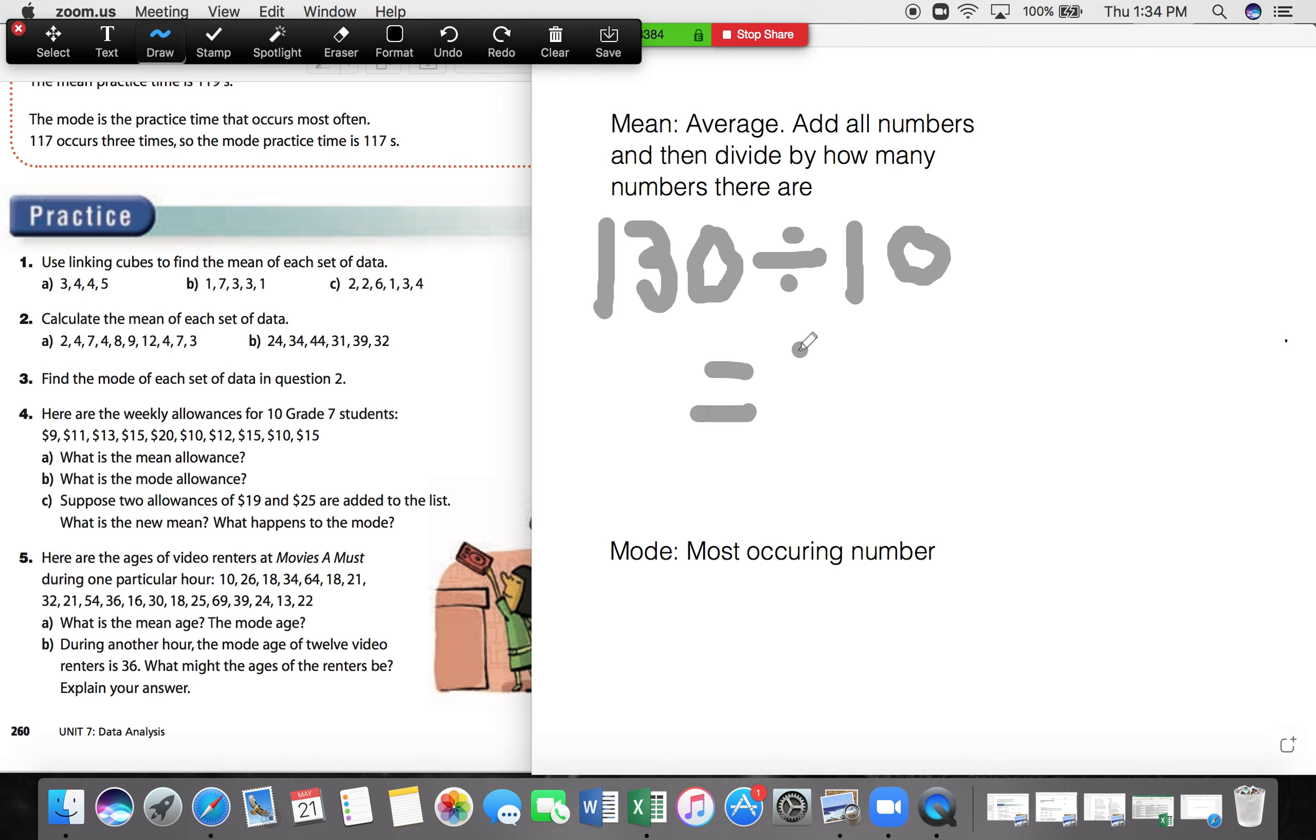130 divided by 10 should give you 13. So the mean number, this is part A, is 13. The average weekly allowance for 10 grade 7 students is $13. Let's not forget our units. That is dollars.